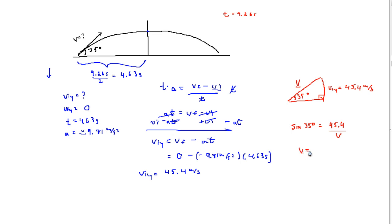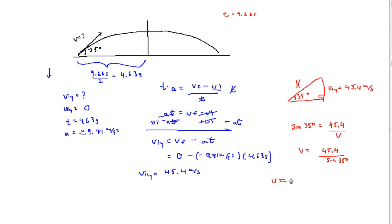Solving for V, we get 45.4 divided by sine of 35, which gives us a velocity of 79.2 meters per second. Therefore, the initial velocity of the projectile projected at 35 degrees is 79.2 meters per second.